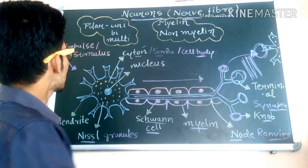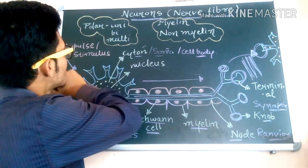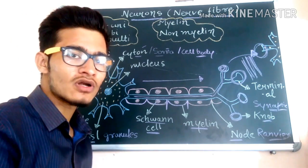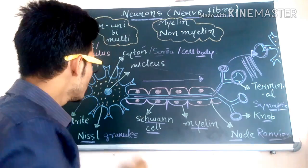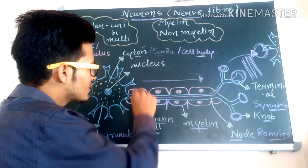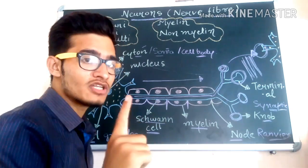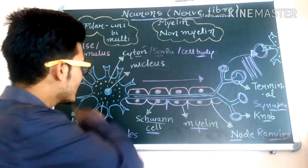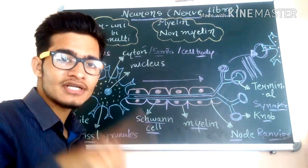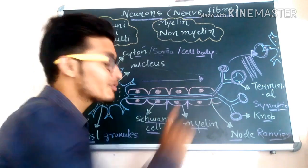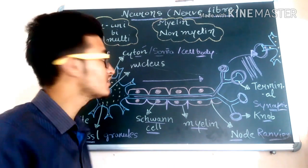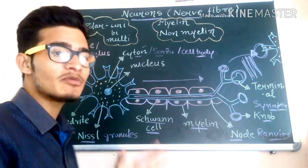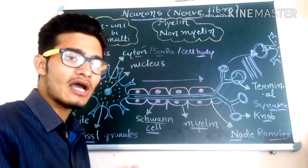There are different kinds of neurons on the basis of their polarity. For example, unipolar neurons are those neurons in which only one axon is present. As the name indicates, uni simply means one. All the dendrites are absent and only one axon is present. These kinds of neurons are located in the embryonic stage.